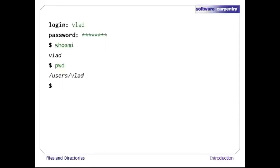To understand what this means, let's have a look at how the file system as a whole is organized. At the very top of the file system is a directory called the root directory that holds everything else the computer is storing. When we want to refer to it, we just use a slash character. This is the leading slash in /users/vlad.